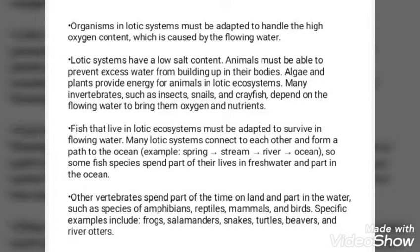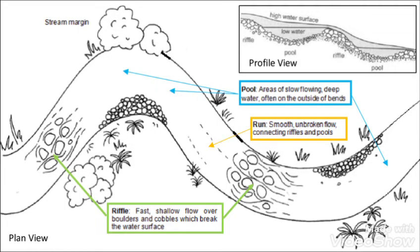Fish that live in lotic ecosystems must be adapted to survive in flowing water. Many lotic systems connect to each other and form a path to the ocean. Some fish species spend part of their lives in fresh water and part in the ocean. Other vertebrates spend part of their time on land and part in the water, such as species of amphibians, reptiles, mammals, and birds. This figure represents the pool zone and riffle zone — fast, shallow riffle zones and areas of slow, flowing deep water referred to as pool zones.